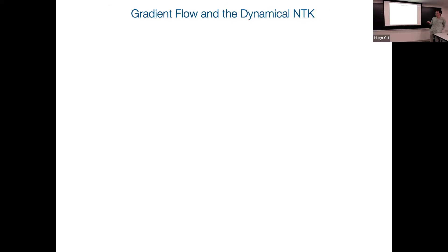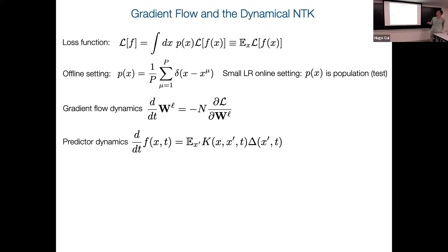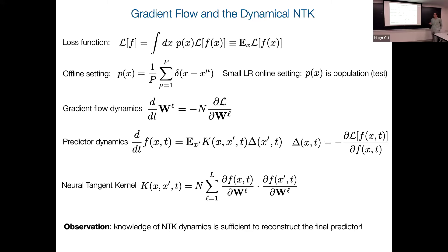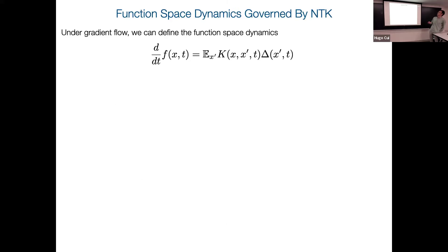When we say NTK here, we don't necessarily mean the frozen kernel — this is just writing down gradient flow in a fancy way. This is always true. If you take a different limit, then K could be frozen. But in the limit we're going to consider, K is going to move by order one.